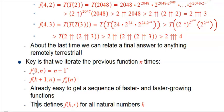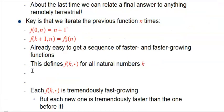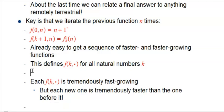So we've basically defined f of k for all natural numbers k. And so if I had f of 100 comma 1000, that's going to be a really, really big number. But we're going to go way beyond that.